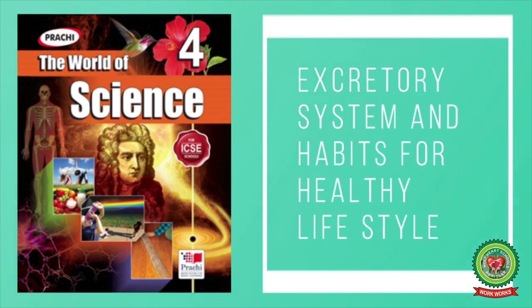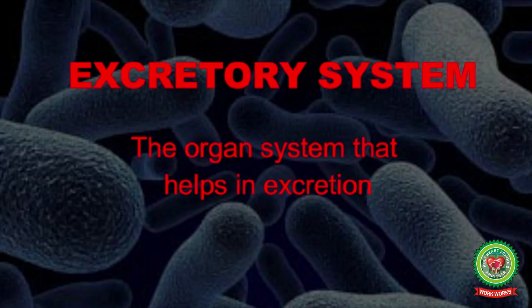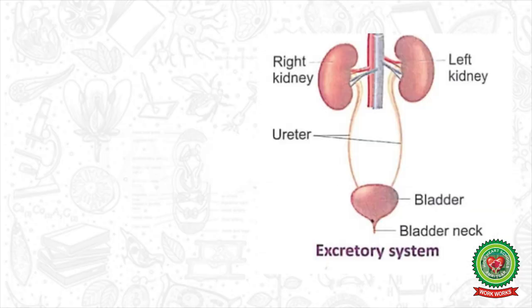Open your book at page number 32 and let's start reading from the topic excretory system. The excretory system consists of kidneys, urethra, ureters, and urinary bladder. Underline the words 'excretory system.' The definition of excretory system is: the organ system that helps in excretion. Our excretory system has four organs: number one, kidneys; number two, urethra; number three, ureter; and number four, urinary bladder.